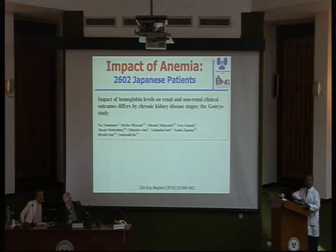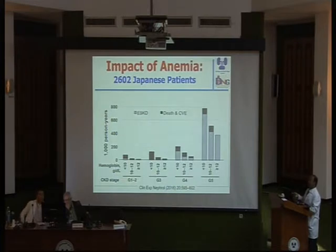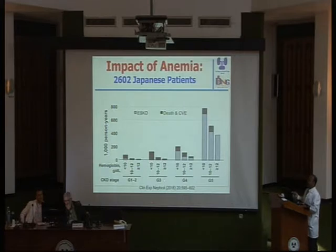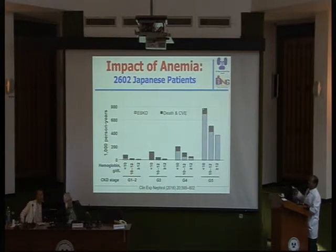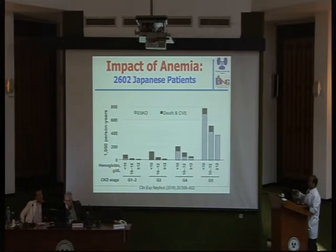Just to show you that anemia is important, this is data from Japan showing the stages of chronic kidney disease — stage 1 and 2, stage 3, stage 4, and stage 5. Stage 5 is GFR below 15, stage 4 from 30 to 15, stage 3 from 60 to 30, and stage 1 above 60 mL per minute. Looking at the bar chart, the black part refers to death and cardiovascular events, and the green one refers to kidney disease progression. In all categories, if hemoglobin is less than 10, both progression to kidney disease and mortality are high.